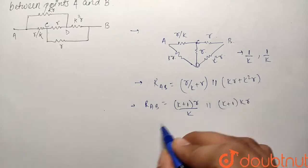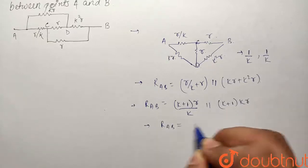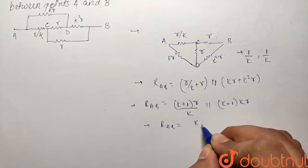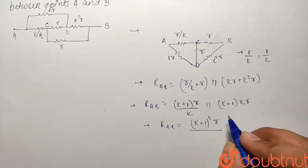So if I simplify what I have is R AB will be their multiplication divided by their division. So if we multiply it becomes K and K will cancel out, it will become K plus 1 whole square multiplied by R divided by their summation.